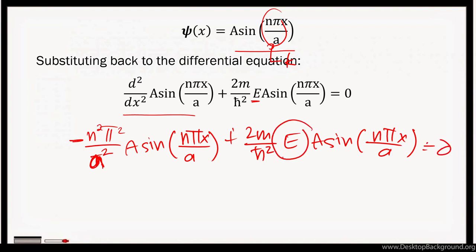Isolating E to get the allowable energies for a particle in the one-dimensional infinite potential well, cancel sin(nπx/a), cancel A, we get E = (n²π²/a²)·(ℏ²/2m). And we'll see here, we have n.